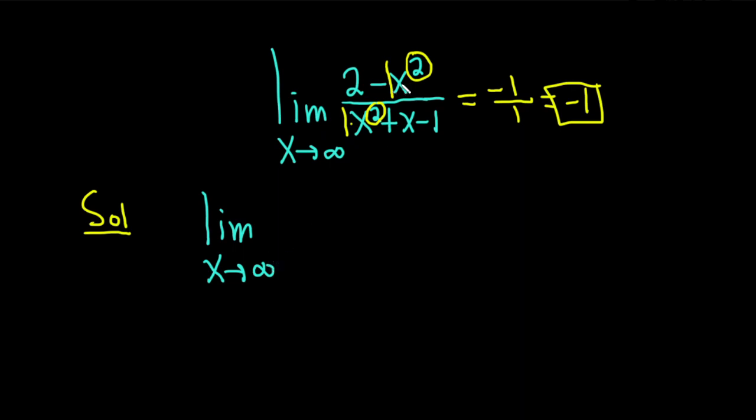I'm going to start by putting the negative x squared first. It's not necessary, but it makes it look better. This is negative x squared plus 2, all of this divided by x squared plus x and then minus 1.